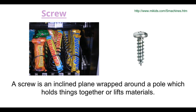A screw is an inclined plane wrapped around a pole. We talked about an inclined plane in some of the earlier lessons. A screw can be used to hold things together or lift materials, as we see in the example right here. To the left, this screw is going to actually turn so that it will allow the candy bars to drop out, while on the right, that screw is used to actually hold something together or make something more secure.